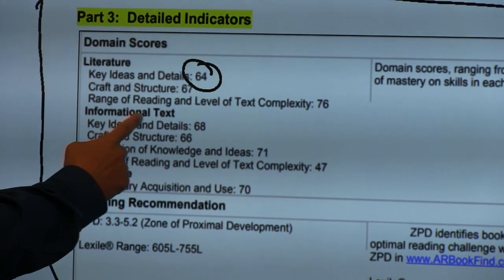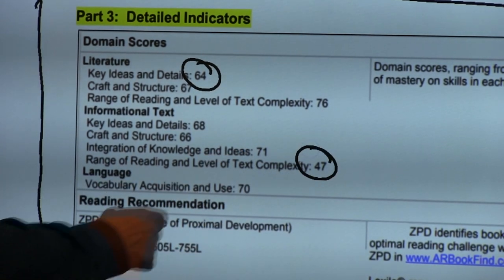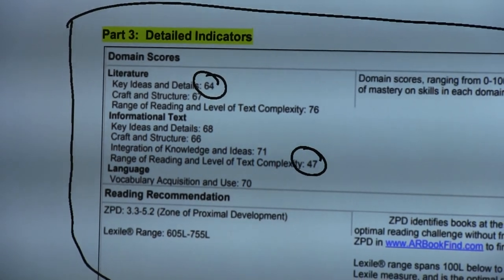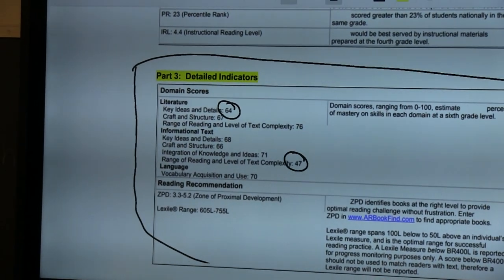Similarly in the informational text category we can see that a weakness for this student is range of reading and level of text complexity. These are two things that we as teachers and the staff can individualize instruction for those students based on what those weaknesses are.